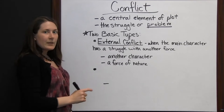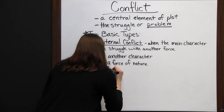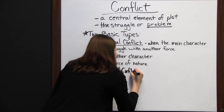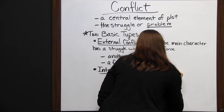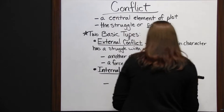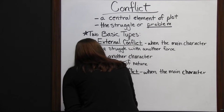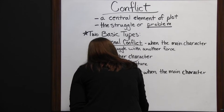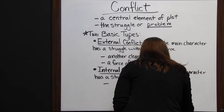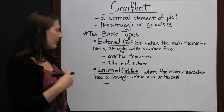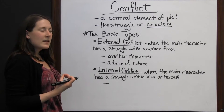The other basic type of conflict would be an internal conflict. We had external where the problem was outside. Internal conflict is when the main character has a problem they're struggling with internally — when the main character has a struggle within him or herself. It isn't anything outside, and it isn't anything other people are affecting. They could influence it with their actions, but the problem is really going to reside within that person.